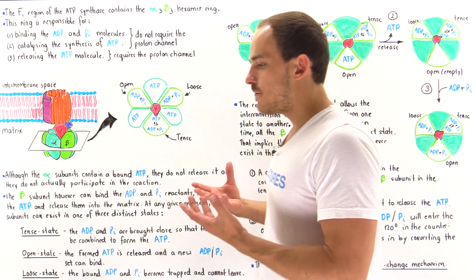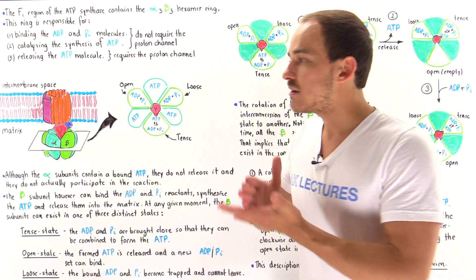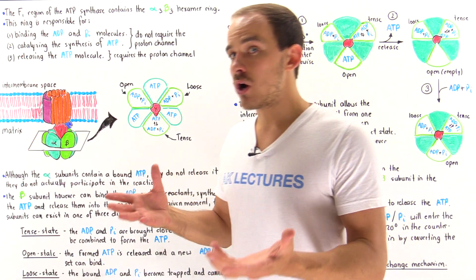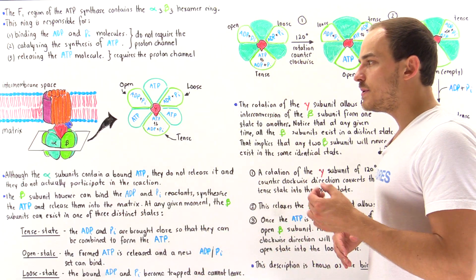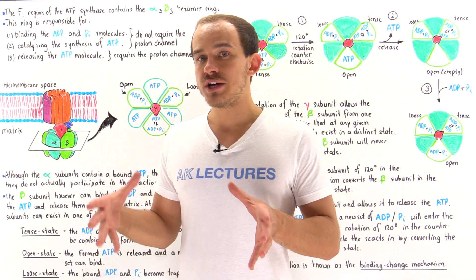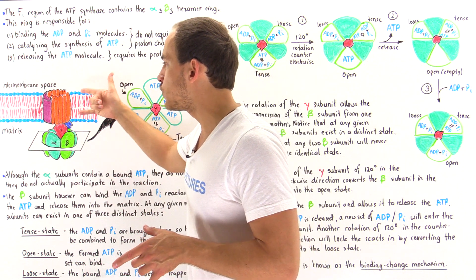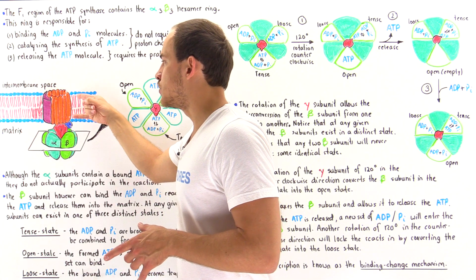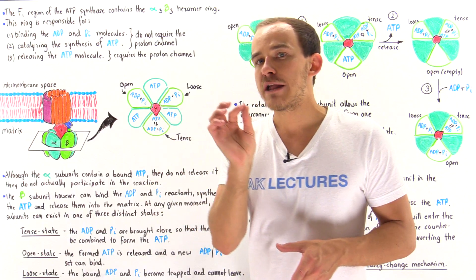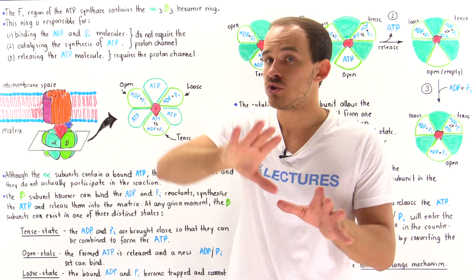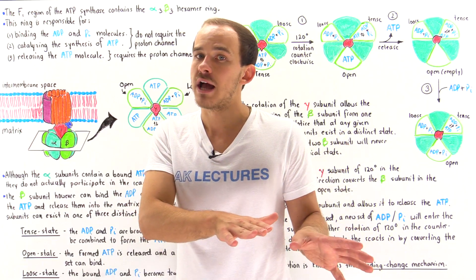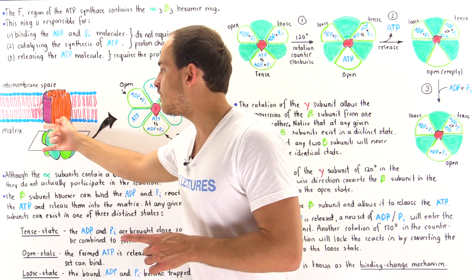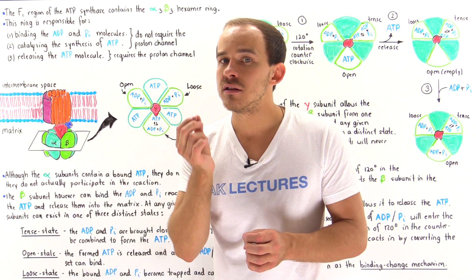In this lecture, I'd like to focus on the catalytic subunit — the catalytic structure of ATP synthase. Remember, ATP synthase can be broken down into two regions. One region is found in the inner membrane of the mitochondria: the F0 region, which contains the proton channel that rotates. In this lecture, I'll focus on the other region: the F1 region, which contains the catalytic structure.